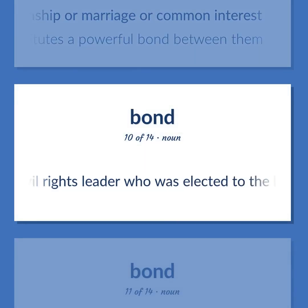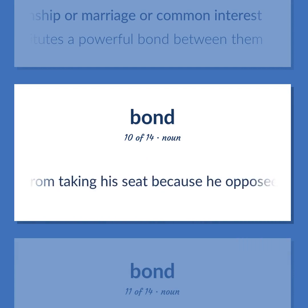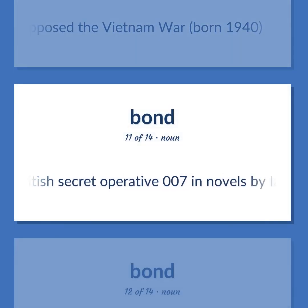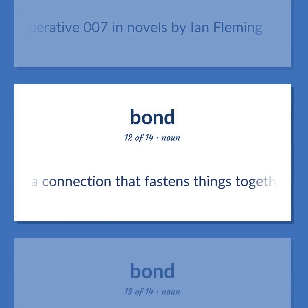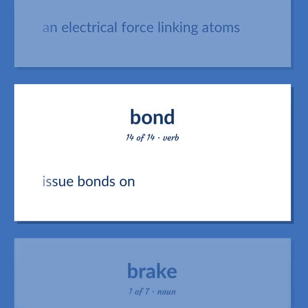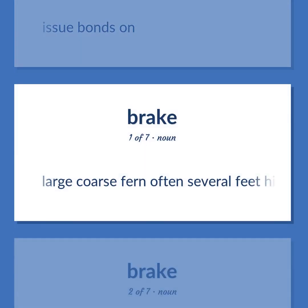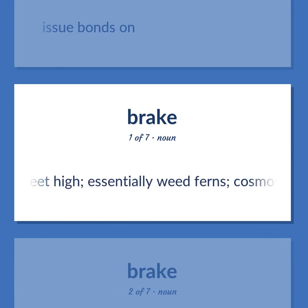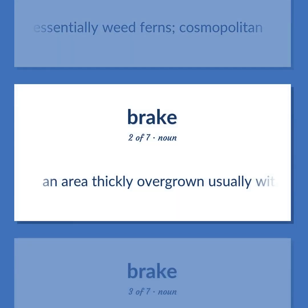Bond: United States civil rights leader who was elected to the legislature in Georgia but was barred from taking his seat because he opposed the Vietnam War, born 1940. British secret operative 007 in novels by Ian Fleming. A connection that fastens things together. An electrical force linking atoms. Issue bonds on. Bracken: Large coarse fern often several feet high; essentially weed ferns, cosmopolitan. An area thickly overgrown, usually with one kind of plant.